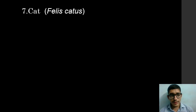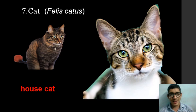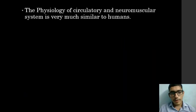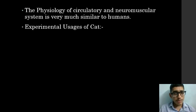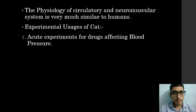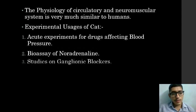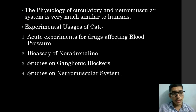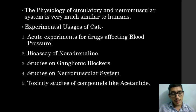The seventh animal is cat. Its biological name is Felis catus, commonly known as the house cat. The physiology of the circulatory and neuromuscular system is very much similar to humans. Experimental uses of cat include: acute experiments for drugs affecting blood pressure; bioassay of noradrenaline; studies of ganglionic blockers; studies of the neuromuscular system; and toxicity studies of compounds like acetanilide.